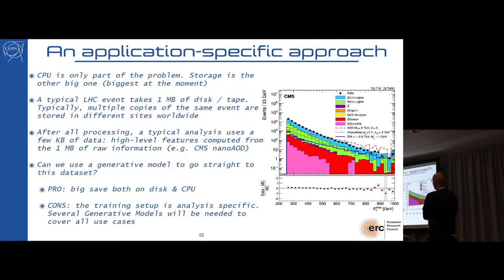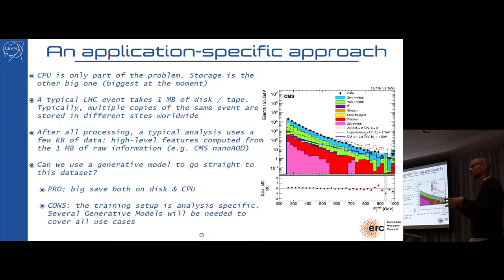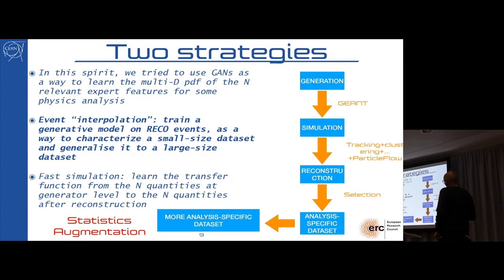At the end of the day, an actual analysis uses a few handful of expert features. The point is that which expert features are used depends on the analysis. The idea is, can I imagine a generative model that gives me directly, that populates this n-dimensional PDF of expert features, knowing that what I would obtain would be analysis specific? The advantage is that this could be run on demand and would avoid the CPU, and particularly avoid the storage.